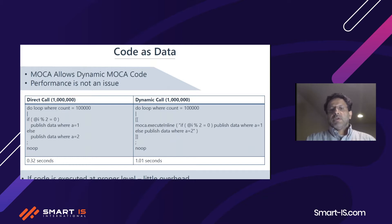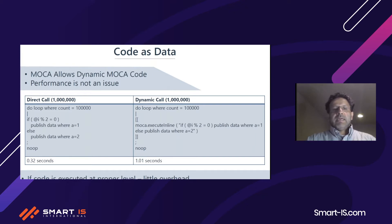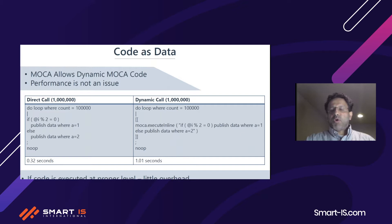Any snippet of MoCA code can be dynamic. You can put code within a variable, which could be read from a database table, and then execute it. You can execute it inline — sensitive to the available context — or you can execute it without context. The performance penalty is slight: over 100,000 executions it went from 0.32 to 1.01 seconds, which is negligible in most scenarios if done at the right level.